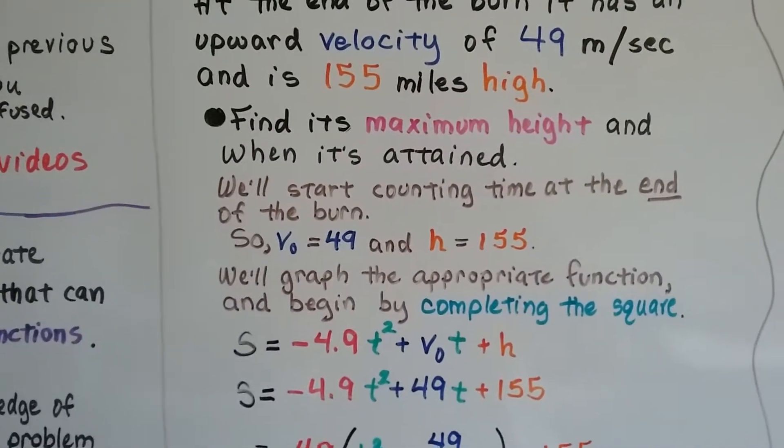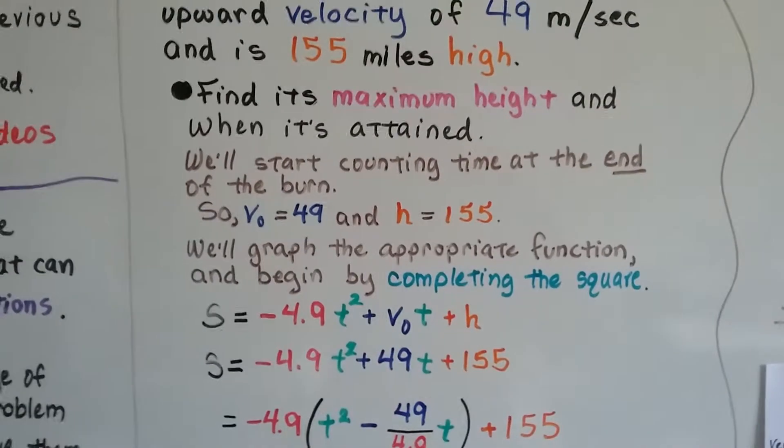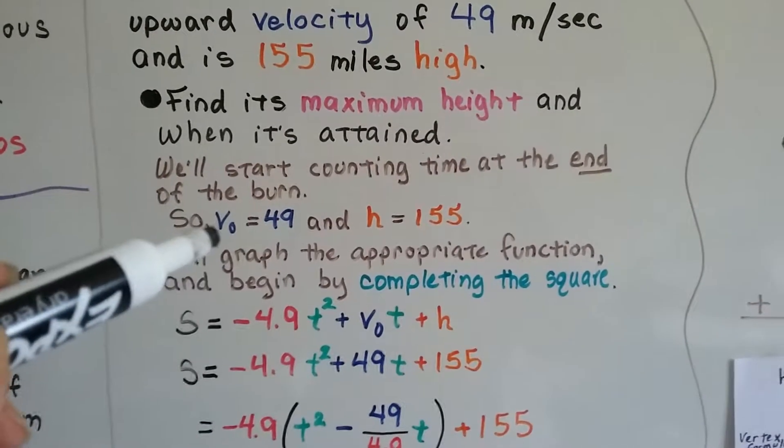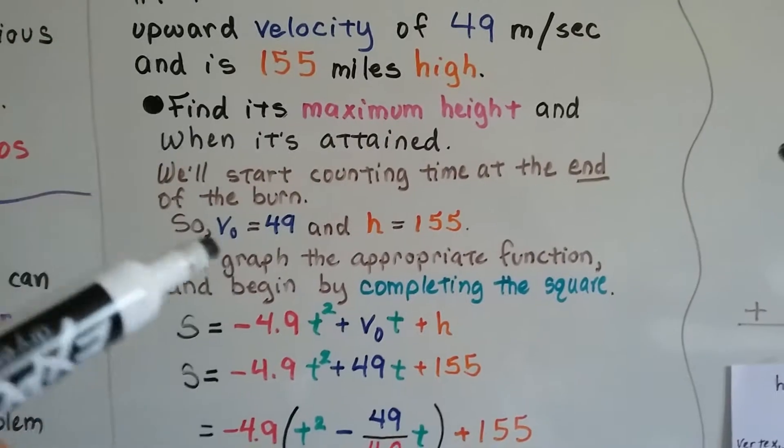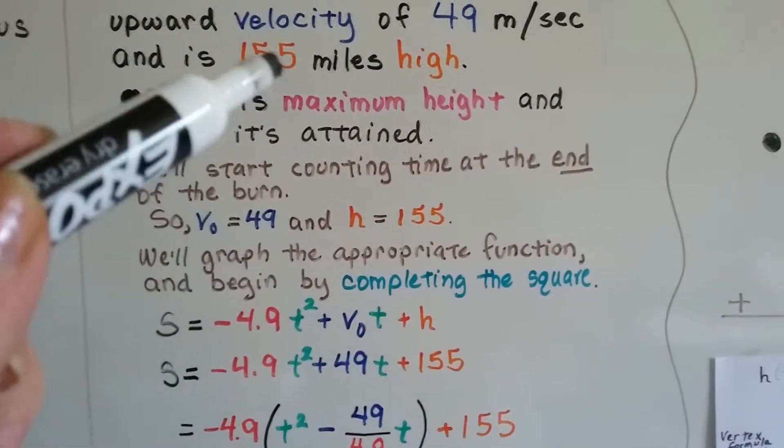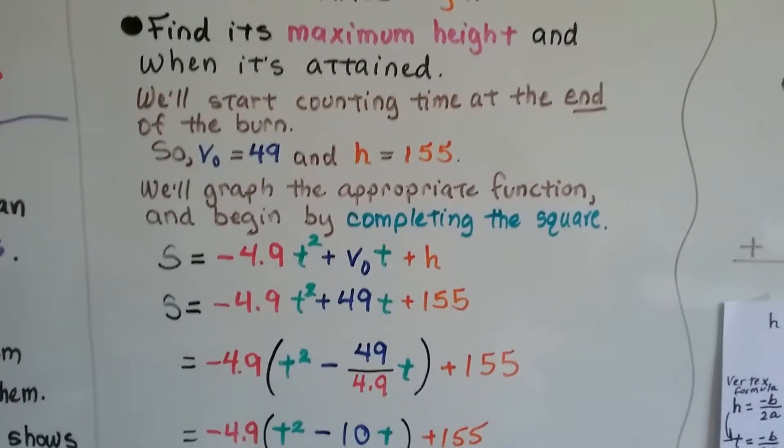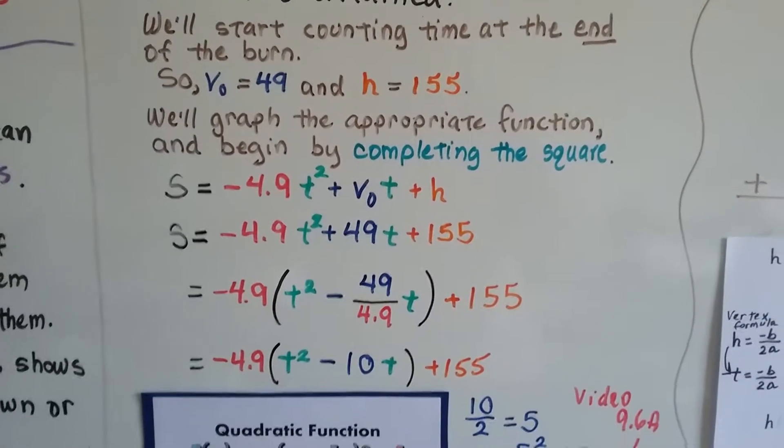We're going to start counting time at the end of the burn. So our v sub zero, our initial velocity is 49, and h is 155. We'll graph the appropriate function and begin by completing the square.